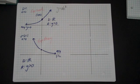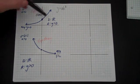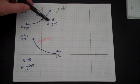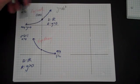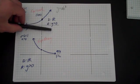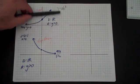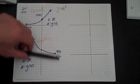For exponential growth and decay, the domain is always all real numbers and the range is defined by the asymptote.